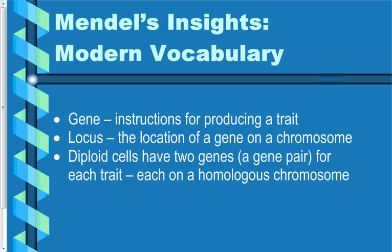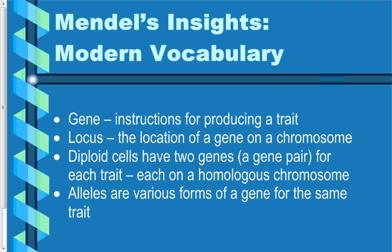Diploid cells have pairs of chromosomes, which means they also have pairs of genes — so every diploid cell has a gene pair for every trait. Every genetic trait you have, you have two genes for it: one from your father and one from your mother. Those genes don't necessarily have to be the same. If your dad gave you different information for the same trait than your mom did, we call those different forms of a gene alleles. For example, there is a gene for height of a pea plant that comes in two different forms: a tall allele and a short allele.